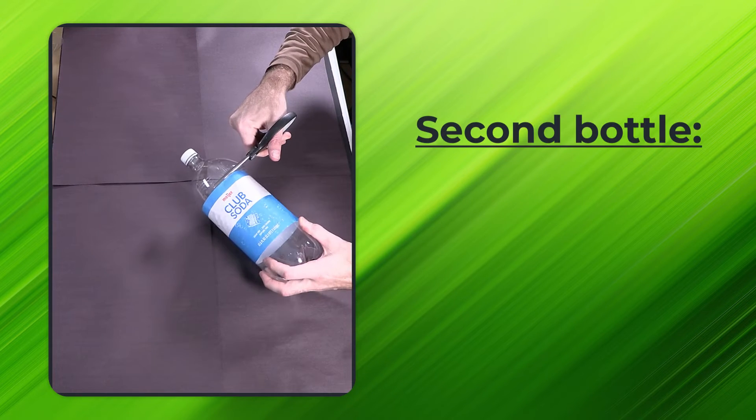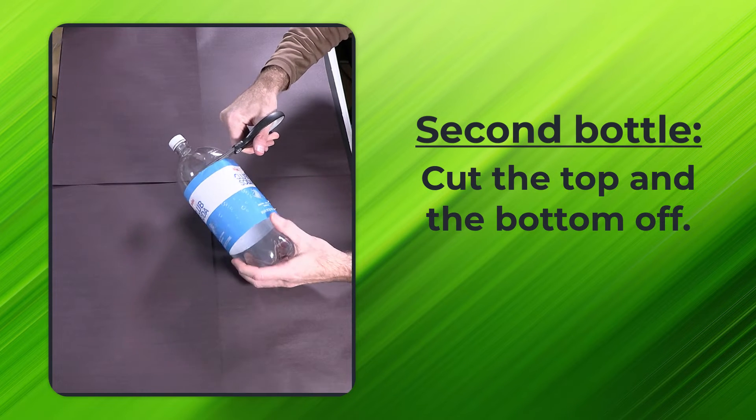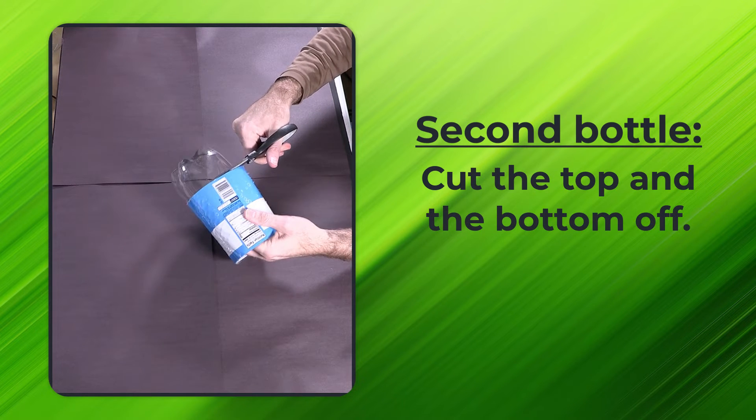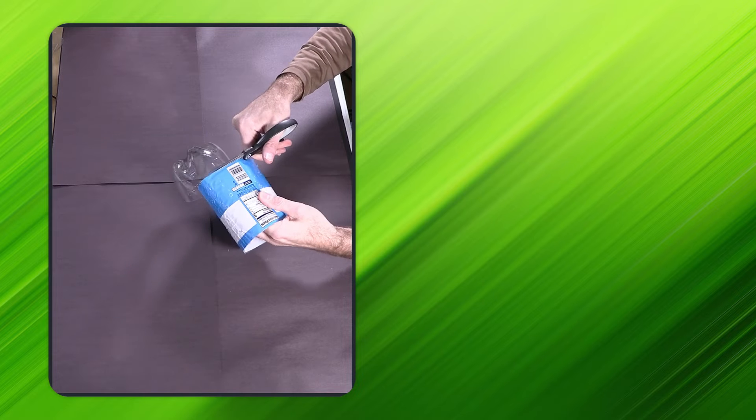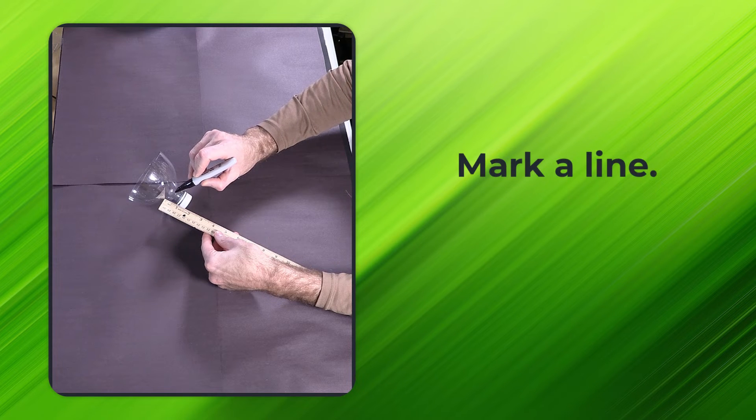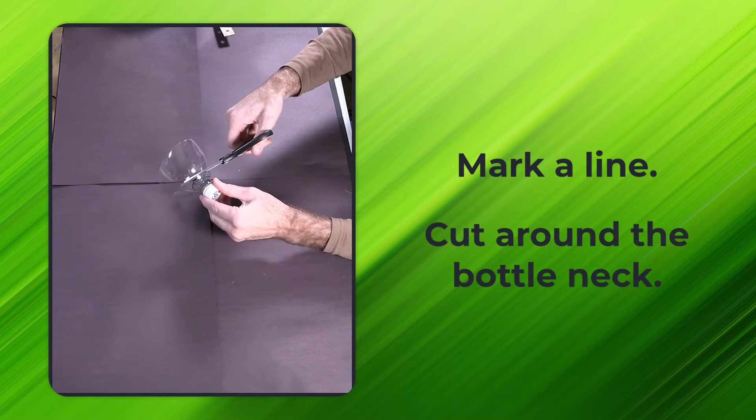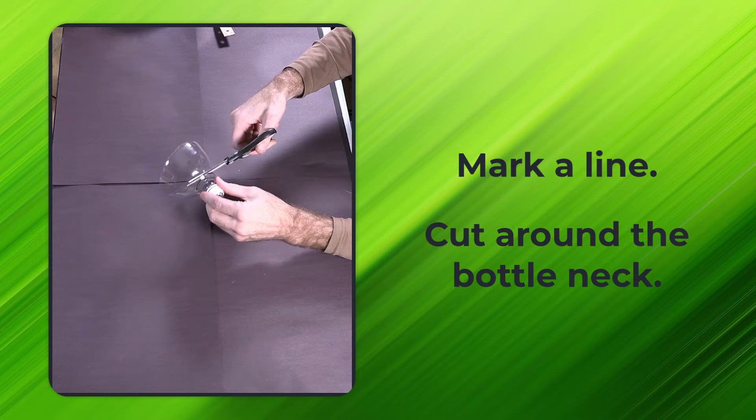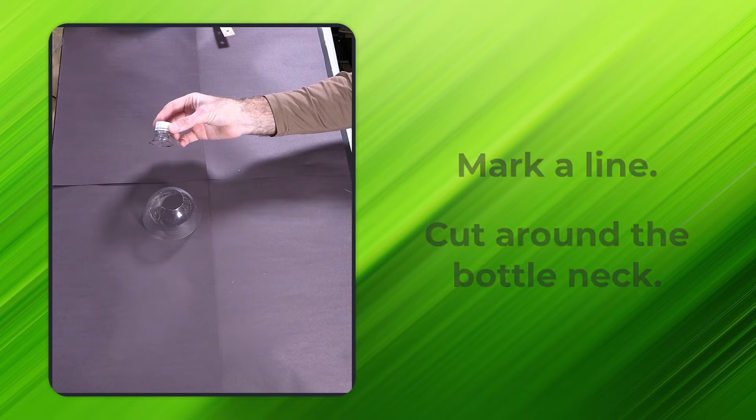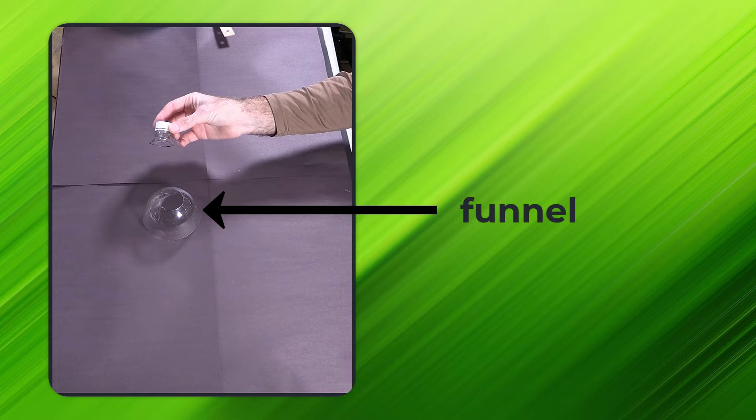On the second bottle, cut the top and the bottom off, again using the label as a guide. Now take one of those tops that you cut off. Mark a line about an inch and a half down and cut around the bottleneck and remove. The piece that's left over will become the funnel of your trap.